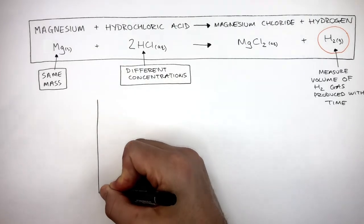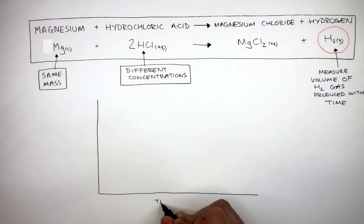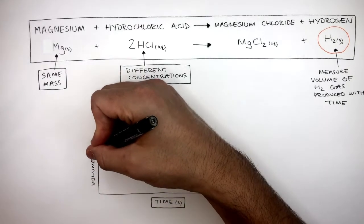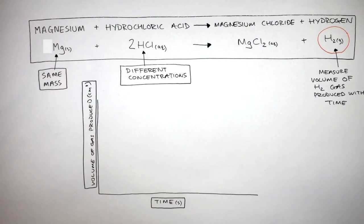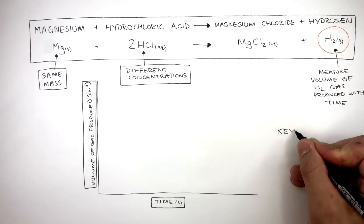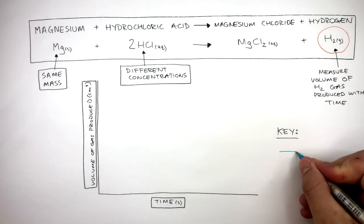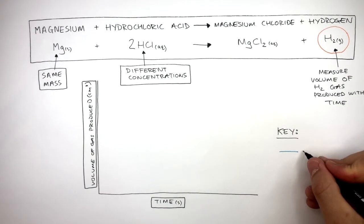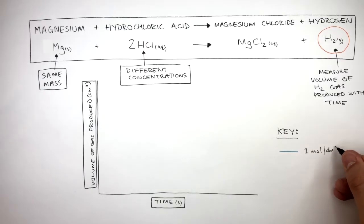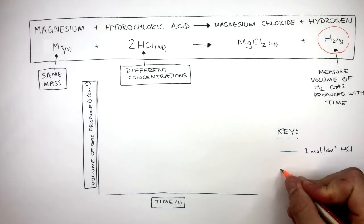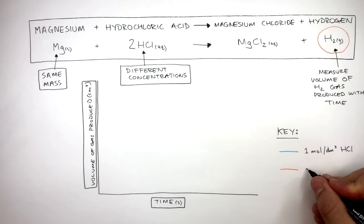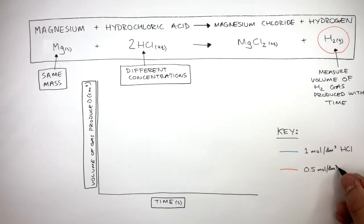We plot these results on a graph where time in seconds is on the x-axis and volume of gas produced in centimeters cubed is on the y-axis. The key shows how the blue line represents the higher concentration of hydrochloric acid which is one mole per decimeter cubed HCl and the orange line represents the lower concentration of hydrochloric acid which is 0.5 moles per decimeter cubed HCl.